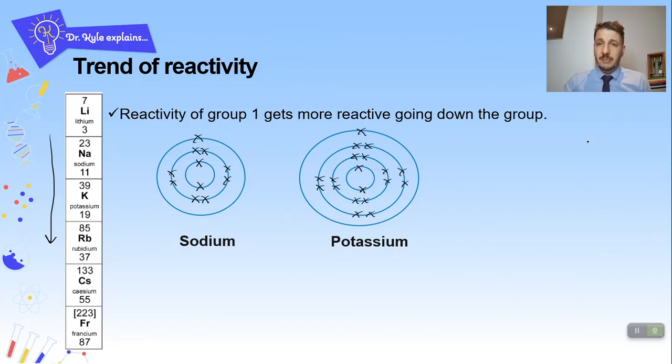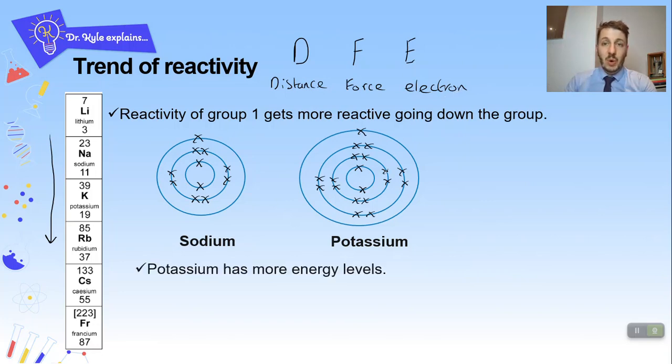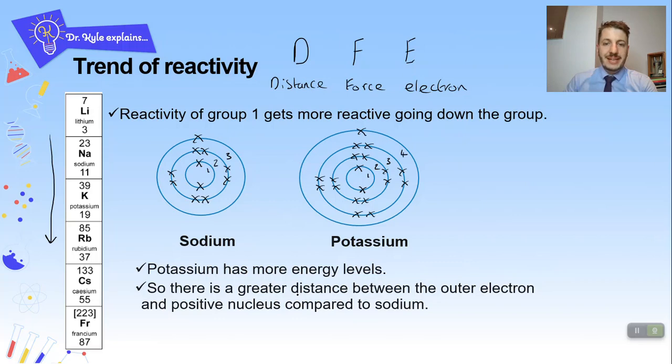Now I'd like you to remember these three letters D F and E. This stands for distance, force and electron. And we're going to summarize this in our answer below. Okay so first of all potassium has more energy levels. And so hopefully we can see we've got one two three four energy levels here compared to sodium's one two three. So there is a greater distance between the outer electron and the positive nucleus compared to sodium.